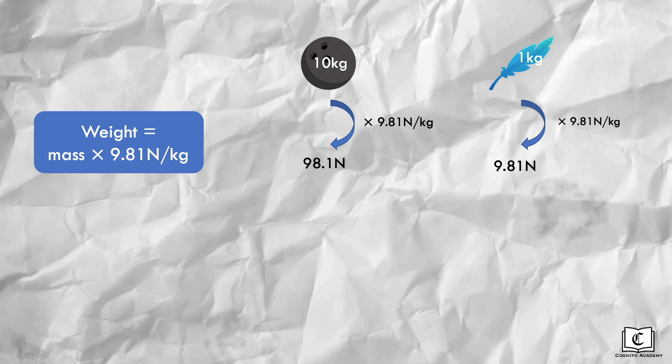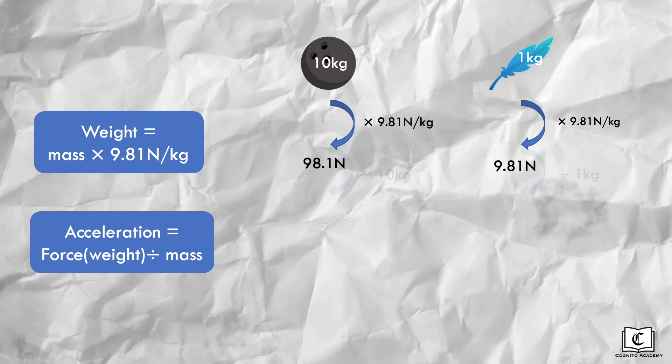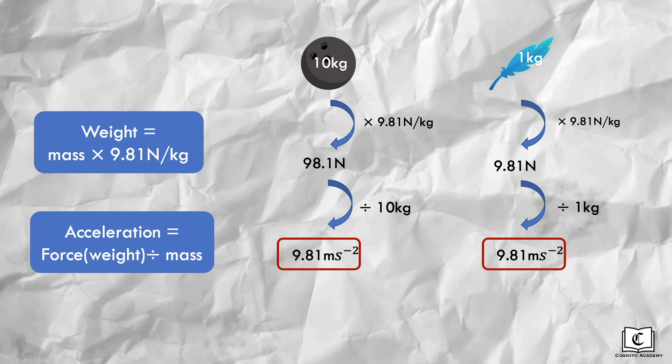Next, since Newton's second law of motion states that force is equal to mass times acceleration, acceleration is just simply force divided by mass. Hence, we take the force which is the weight of the object divided by its mass to give us the acceleration. And as we see, acceleration due to gravity for both objects is similar regardless of mass.